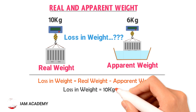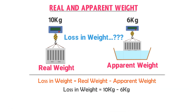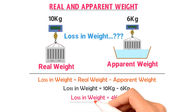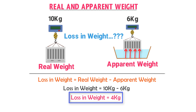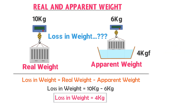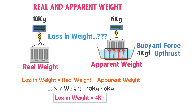The loss in weight is equal to real weight minus apparent weight. Here, the loss in weight equals 10 kg minus 6 kg, so the loss in weight is 4 kg force. Remember that loss in weight is equal to the upward force of the water. Hence the water exerts 4 kg force in the upward direction on this block. This upward force of water in physics is known as up thrust or buoyant force.